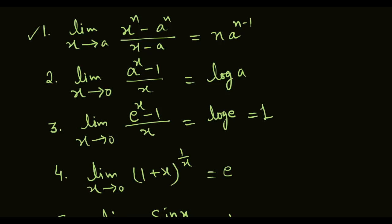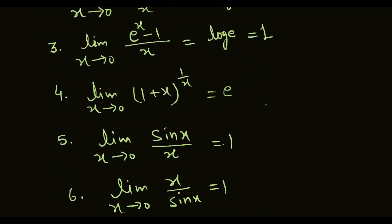Limit x approaches to 0, a raised to x minus 1, upon x — notice x appears in both numerator context and denominator, so log a comes out. Third: limit x approaches to 0, e power x minus 1 — same formula with e in place of a, upon x, equal to log e equal to 1. Fourth: limit x approaches to 0, 1 plus x raised to 1 upon x — both x terms must match; for example if numerator has 2x, denominator must also have 2x.